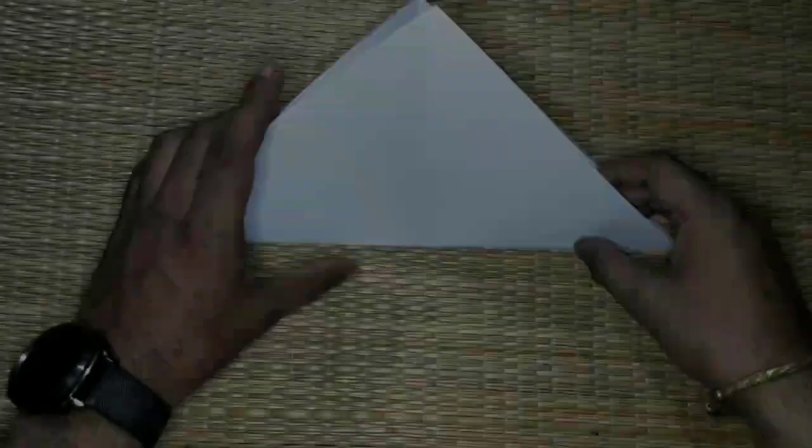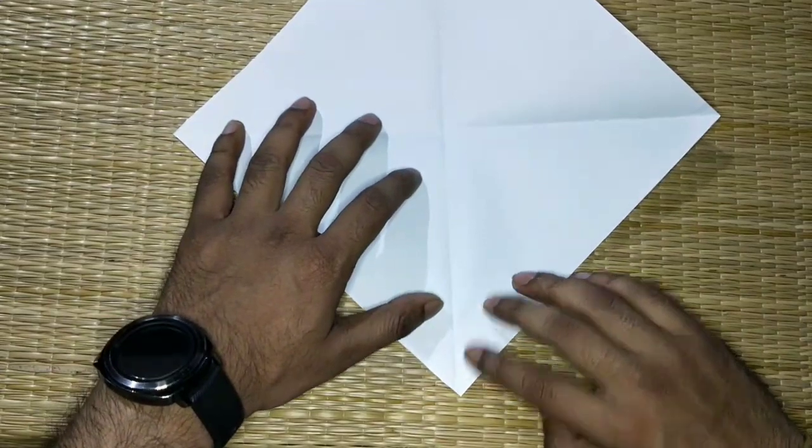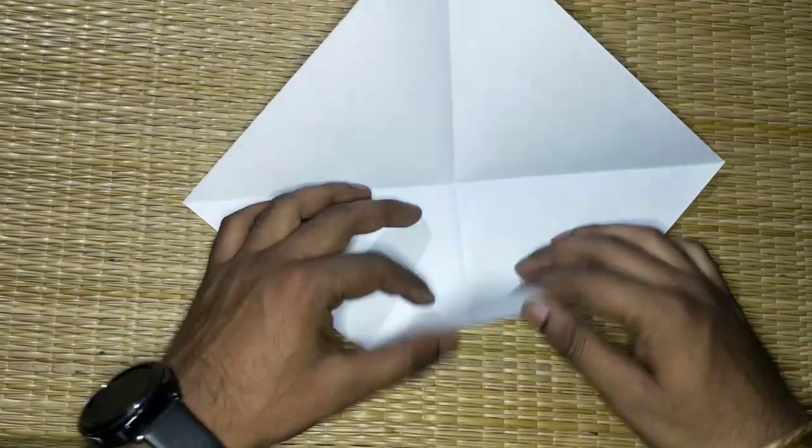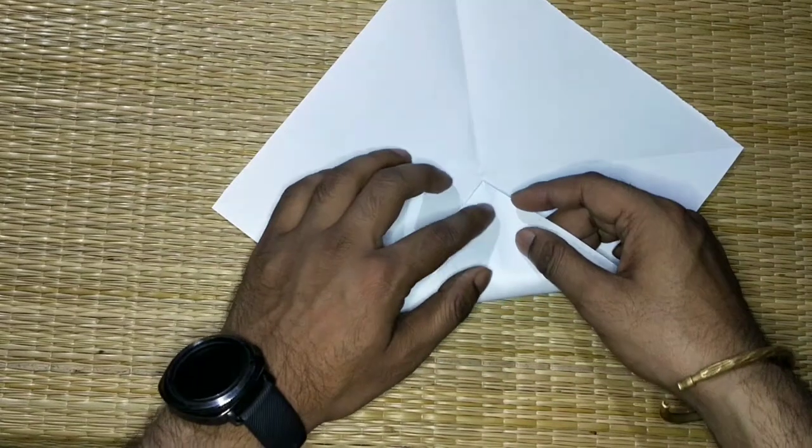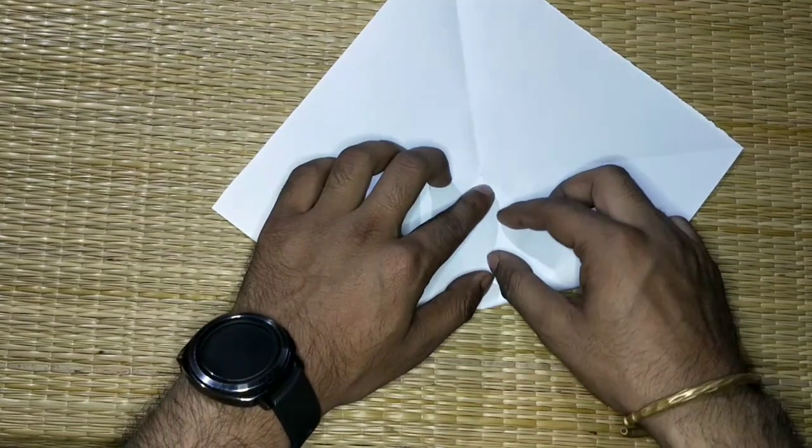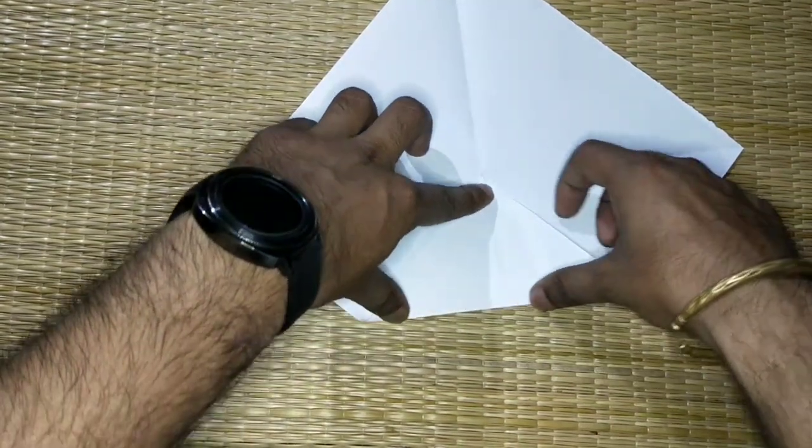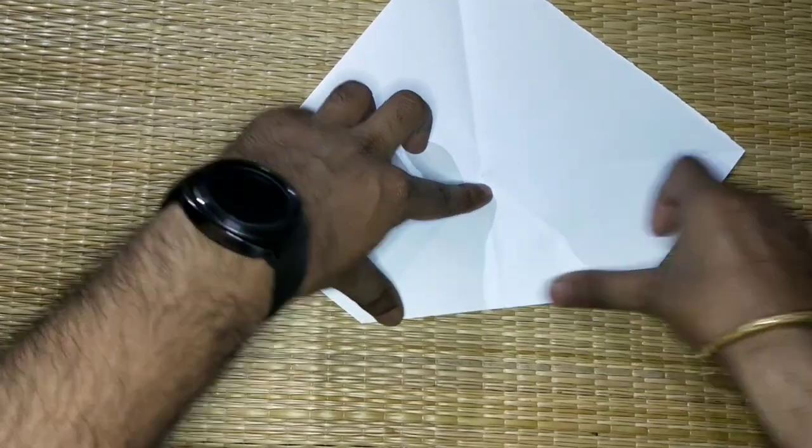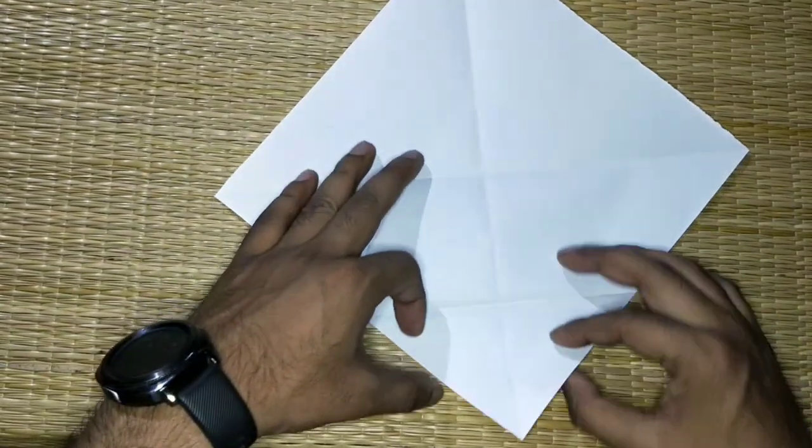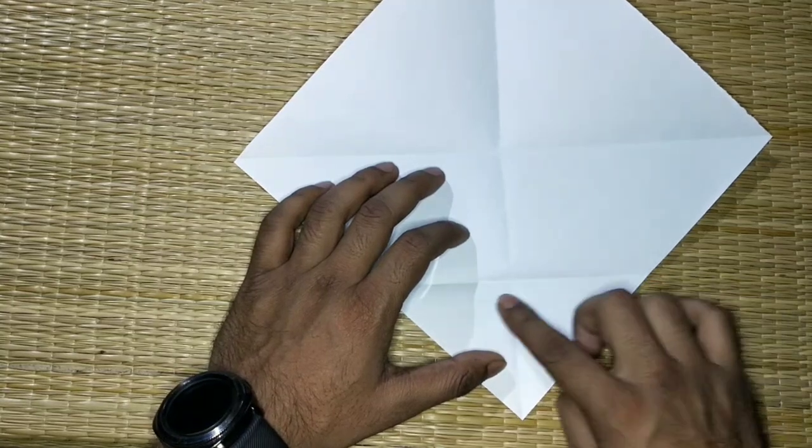Now open your page and again take this corner and match it on the cross point. Done, open. Now you have this impression on the page. Half it.